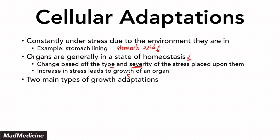The two main types of growth adaptations you should be well versed in are hypertrophy and hyperplasia. We've discussed these in a previous video, so you can check it out on our YouTube channel. In this essential growth adaptation phase, your organ grows in size. That is what happens when you have too much or an increased amount of stress — the organ increases in size.